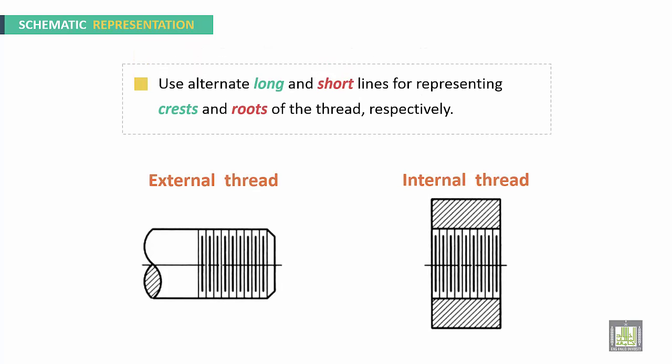For the schematic representation, alternate long and short lines are used for representing crests and roots of the thread respectively. So here, long lines are for crests, and short lines are for roots. The same applies to the internal thread.